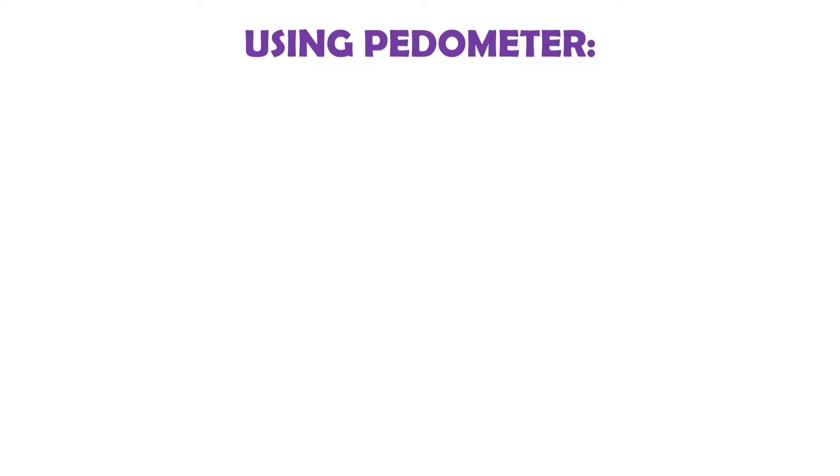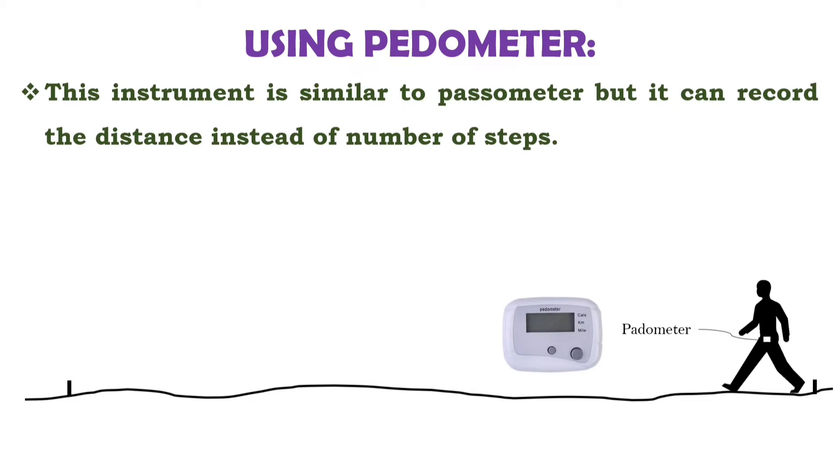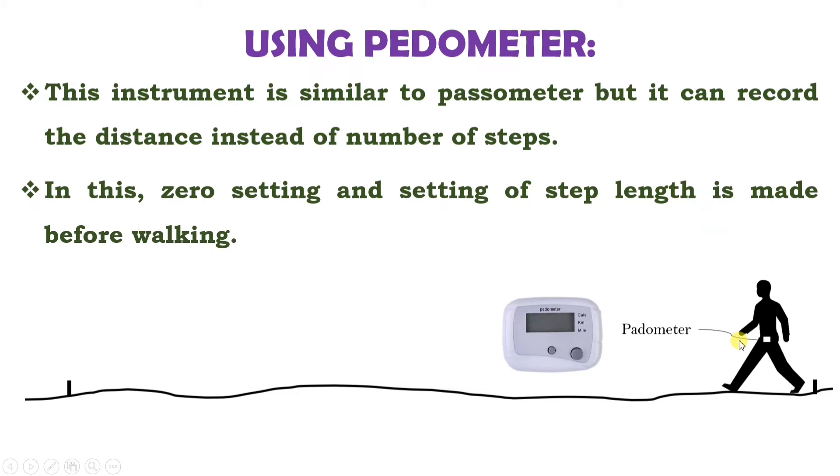The next method is pedometer. Pedometer is an instrument similar to passometer, but it can record the distance instead of number of steps. In pedometer, instead of number of steps, the distance is measured. It is attached similarly as passometer. In this, zero setting and setting of step length is made before walking. Before starting, the surveyor needs to set zero and set the average step length.